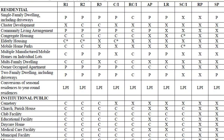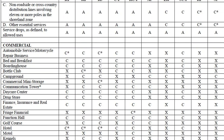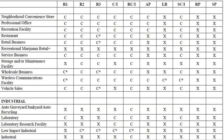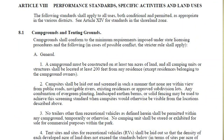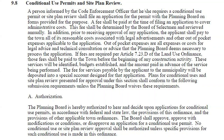In the land use ordinance table — which is literally just a table about six pages long — it has the different zones in the columns and the different uses in the rows. They're either X's or C's. If it's a C, that means it goes through the planning board, and then Article 8 will further detail what requirements it needs.